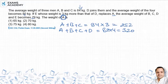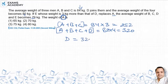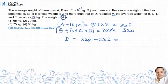अब हम simple सा देख पा रहे हैं कि अगर इस वाले sum में से, जिसमें 4 का weight है, और इसमें ABC का weight है, अगर हम minus करते हैं तो D का weight पता चल जाएगा. D का weight पता चलने के लिए 320 में से minus कर देंगे 252. 320 minus 252 = 68 kg आया.